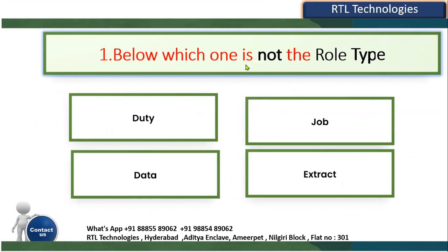The first question is: which one is NOT a role type? In the Global HR module, roles are very important. The application is role-based access. We have duty role, job role, data role, and abstract role — but we do not have any role type called 'extract.' The correct answer is 'extract' is not a valid role type; the valid one is abstract.